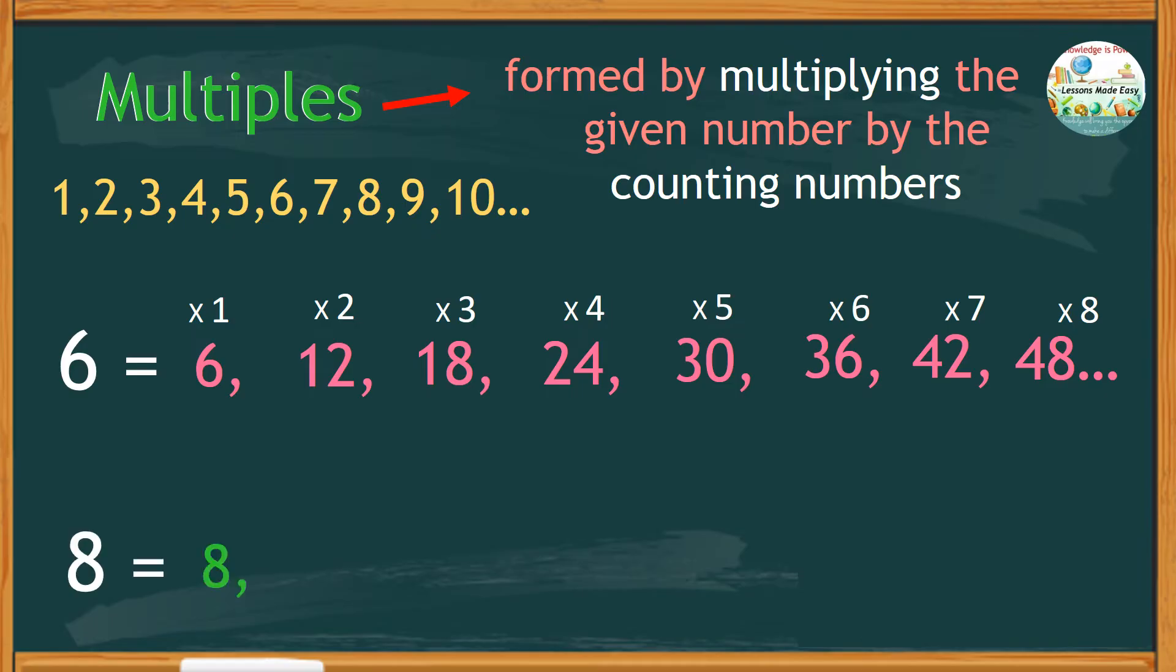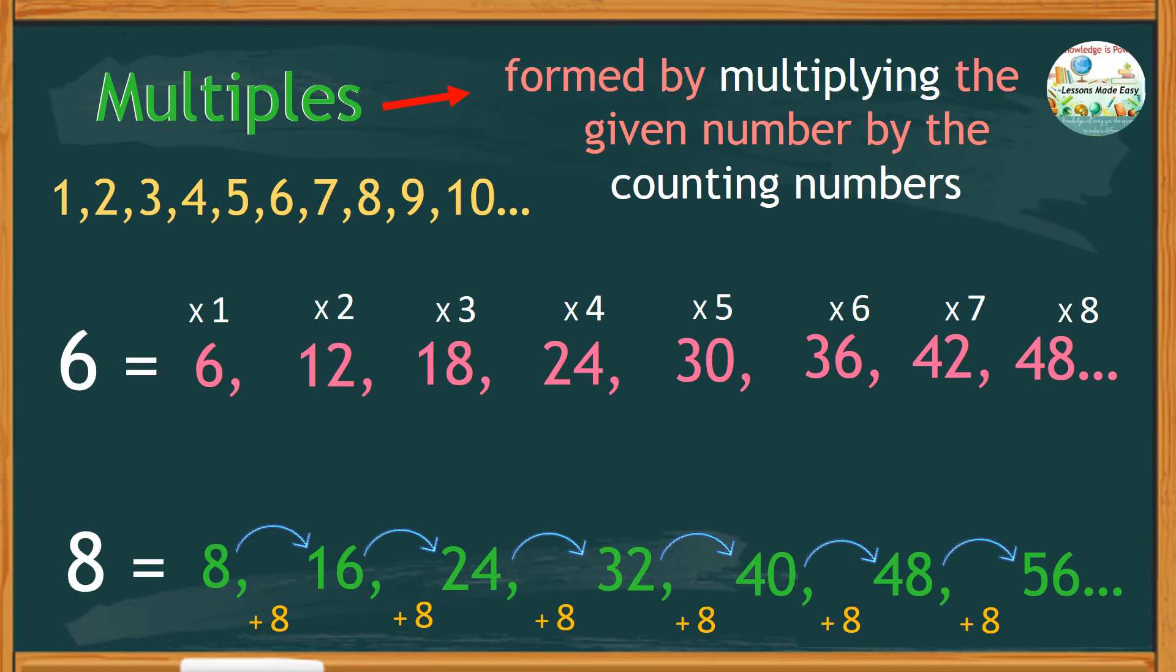We can start from 8s, then repeatedly add by 8s to get the next multiple that would give us 16, plus another 8s that is 24, plus 8 this would be 32, plus 8 that makes 40, plus 8 is 48, and plus 8 is 56, and so on.